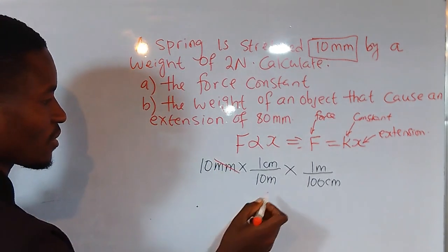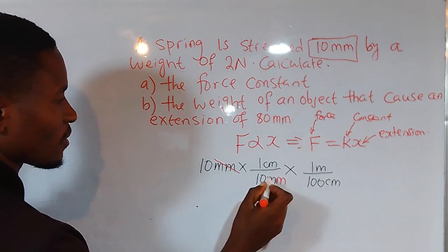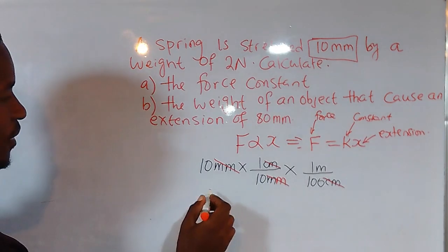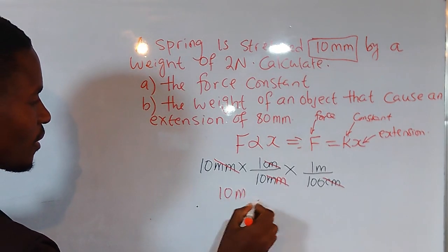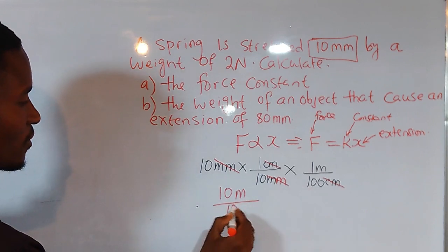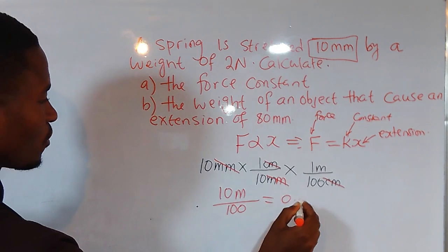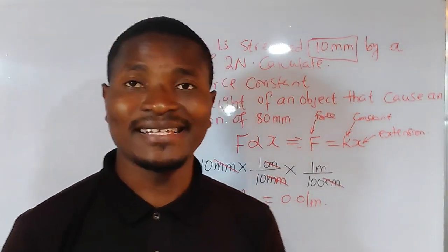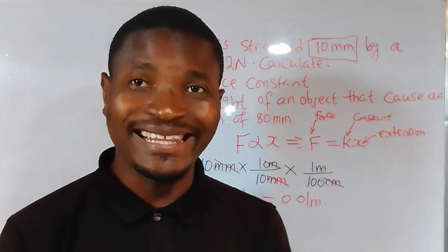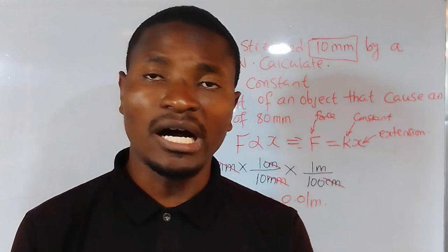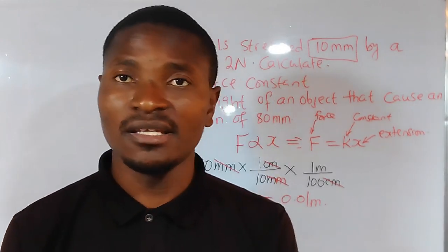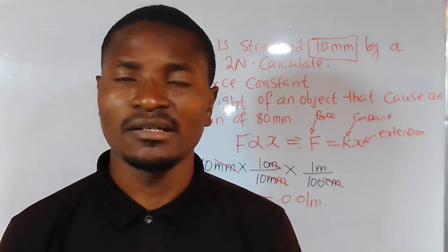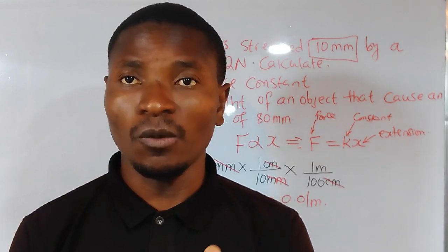The millimeter units cancel and the centimeter units cancel, leaving us with 10 divided by 1000, which gives us 0.01 meters. The most important thing in physics is that when units are not in their standard form, the first thing to do is convert from the given unit into the standard unit of that quantity.